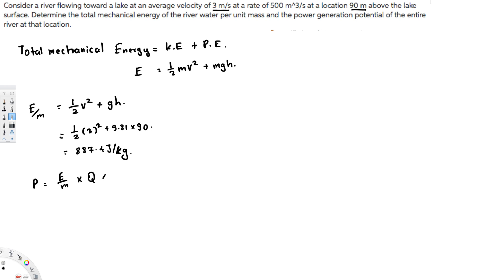So let's say volume flow rate is Q times density. So density is rho, right? So let's apply all the values and see what we get. Eight hundred eighty seven point four joule per kilogram, that's going to be the energy over mass or you can say energy per unit mass.